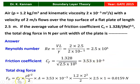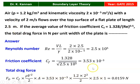The total drag force Fd equals Cf times (rho V² / 2) times area. With Cf = 3.53×10⁻³, rho = 1.2 kg/m³, V² = 4 m²/s², area equals length times width = 2.5×1 m², the answer is 0.0159 Newton. So the drag force equals 0.0159 N, which is the answer to the question.